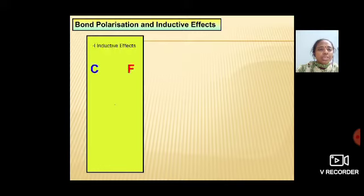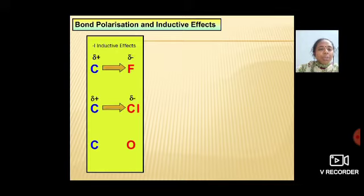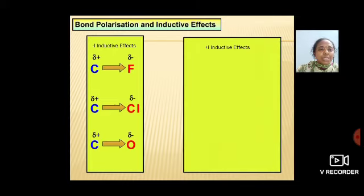Bond polarization and inductive effects. There are two types of inductive effects: -I and +I. In C-F, C-Cl, C-O bonds, fluorine, chlorine, and oxygen atoms are highly electronegative and withdraw electrons towards themselves. These atoms have a partially negative charge and carbon has a partially positive charge.